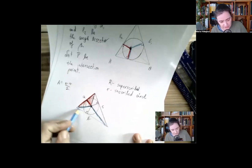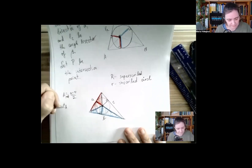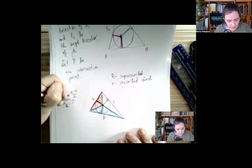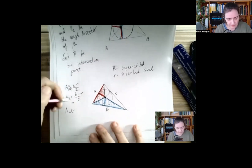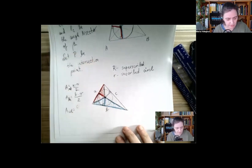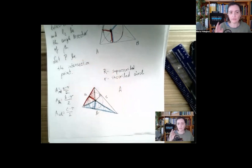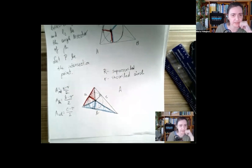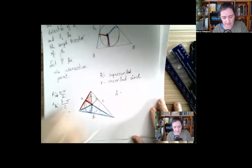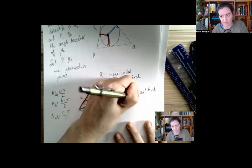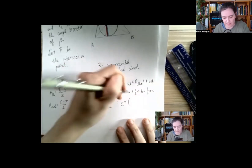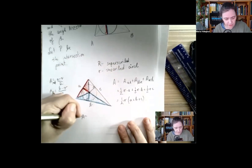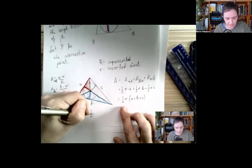Similarly, the blue triangle's area is b·r/2, and the third triangle's area is c·r/2. So the area of the whole triangle equals the three areas added: one-half r·a plus one-half r·b plus one-half r·c. Factoring out one-half r, what's left in parentheses is just a + b + c.